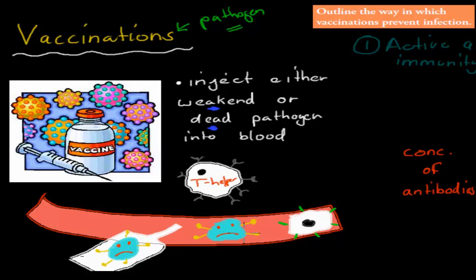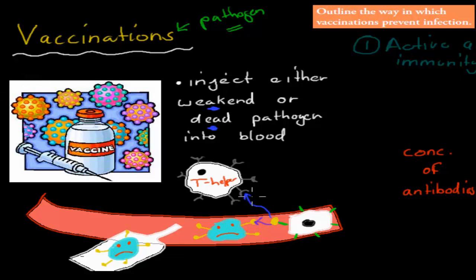Even though this virus is dead, it still has antigens sticking out. The macrophage will eat the pathogen via phagocytosis, take the antigen and put it on its molecule, then move to the T helper cell. That T helper cell will activate the immune response.